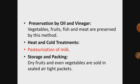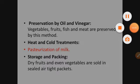Storage and packing is another method — dry fruits and even vegetables are sold in sealed airtight packets. Your chips packets, for example, are packed in such a manner that they use nitrogen just to avoid spoilage. Thank you — revise it and note it down.